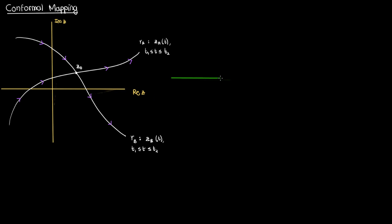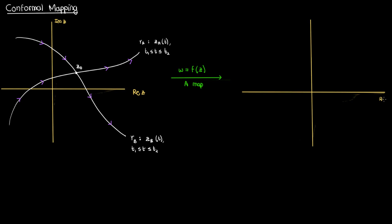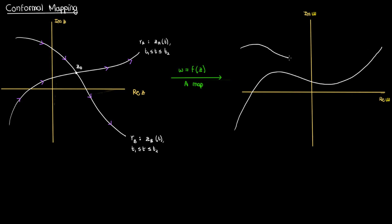Now suppose I have a complex function f that maps a complex number z in the complex z-plane to another complex number w in the w-plane, which I'm going to draw right over here. In the w-plane these curves gamma a and gamma b, which are basically tracings of different values of z, would then be transformed to tracings of different values of w. So gamma a might become capital gamma a and gamma b might become capital gamma b in the w-plane.